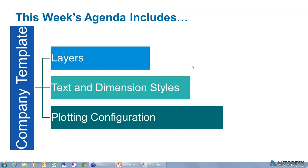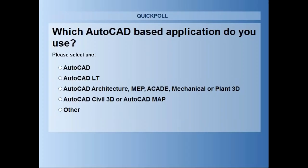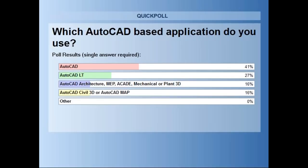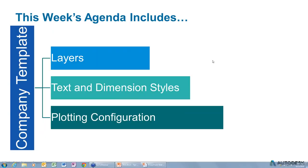The next poll is about which applications people are using — AutoCAD, AutoCAD LT, one of the verticals, or something completely outside of Autodesk. It looks like the majority are running AutoCAD, about a third running LT, and a third running one of the AutoCAD verticals. The results show about 41% AutoCAD, 27% LT, and 16% using one of the other verticals such as Architectural. With that, we'll pass it over to Nauman to start the presentation.